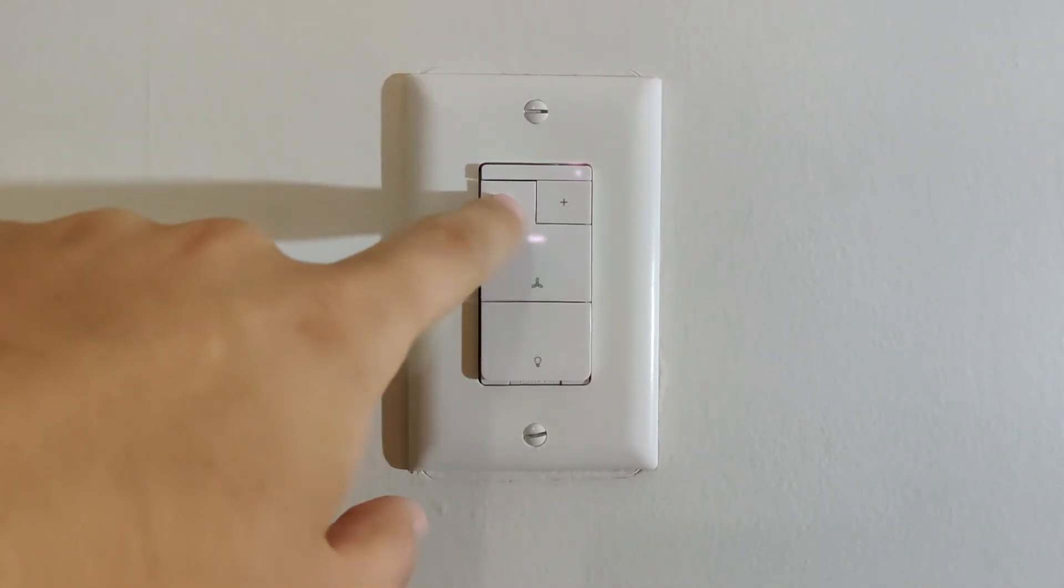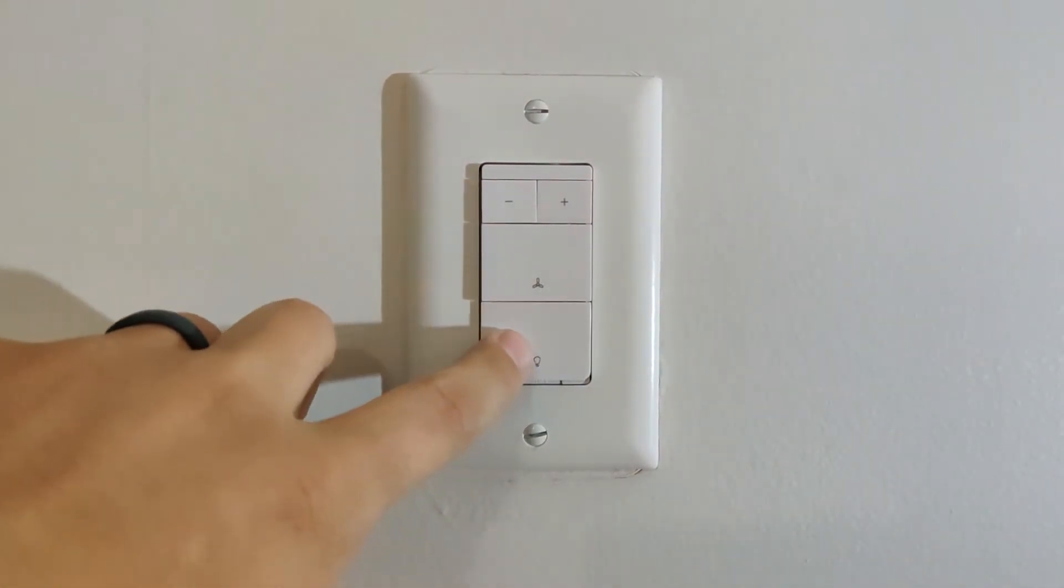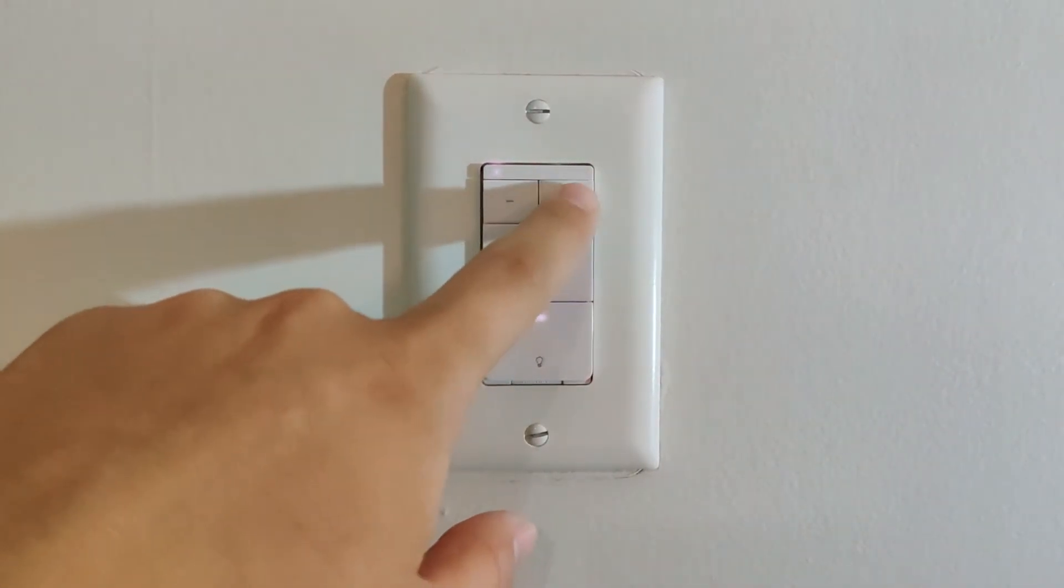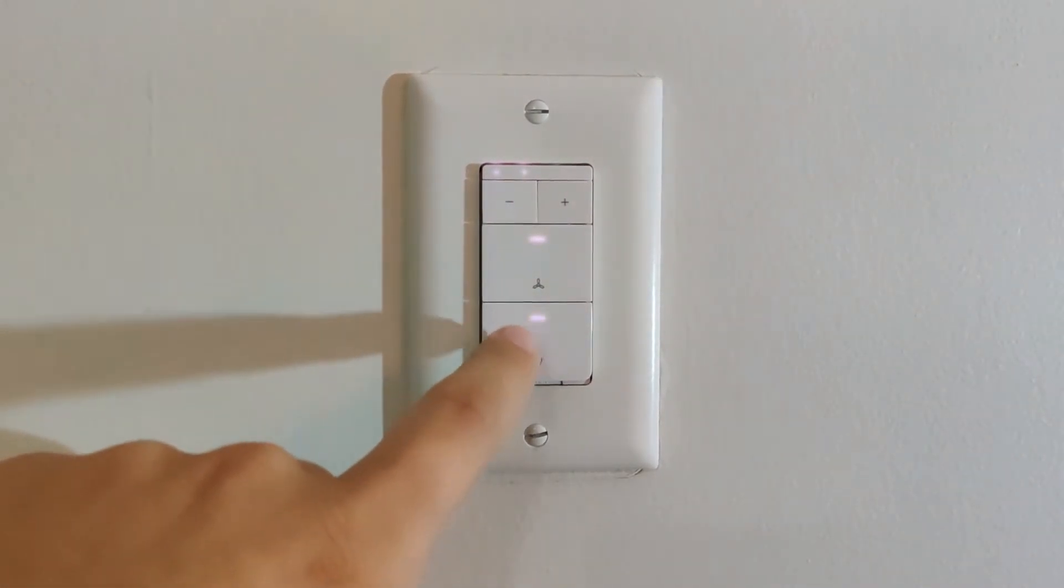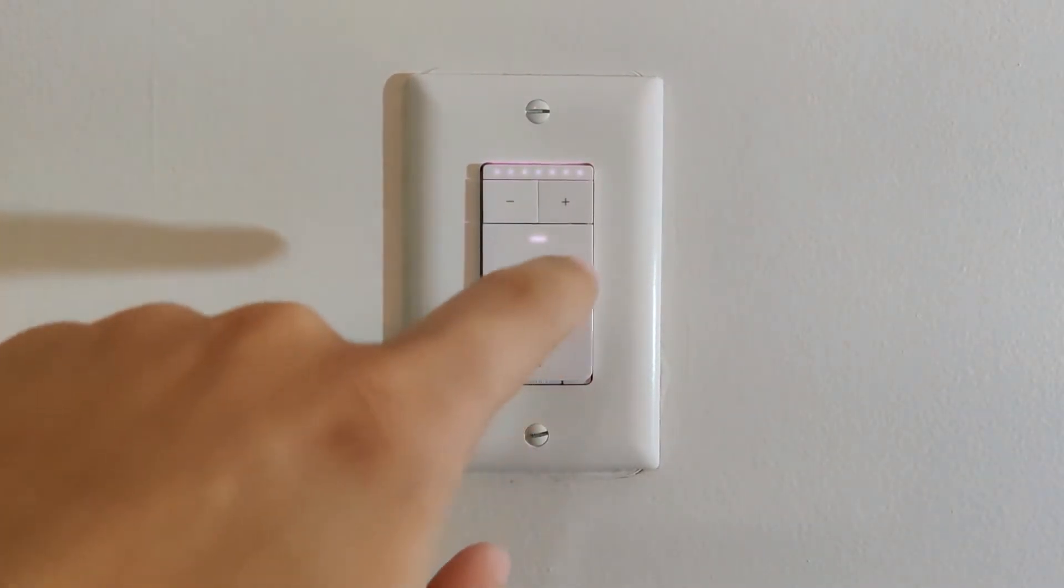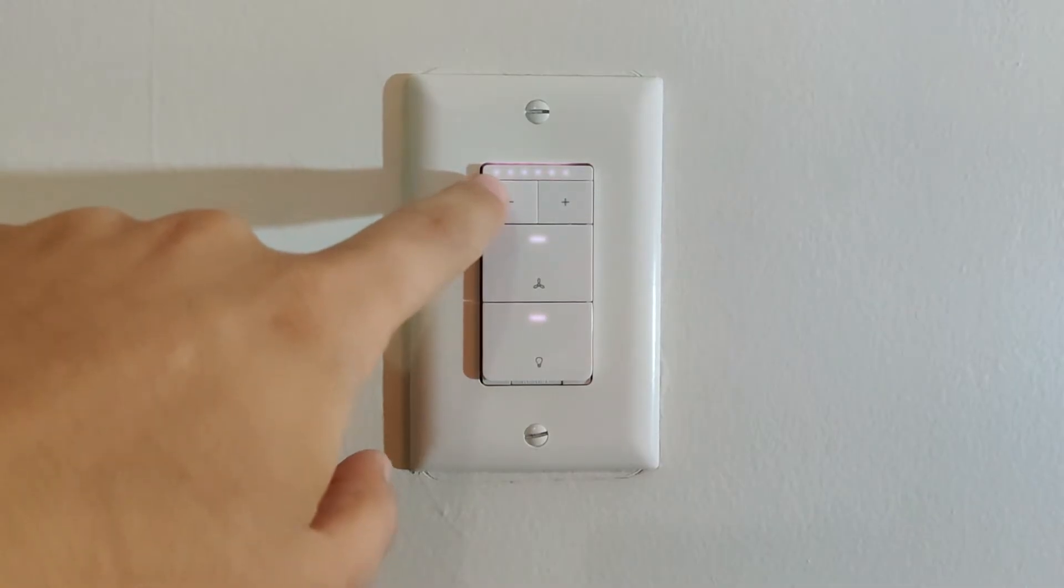Since this smart switch is essentially two switches combined, a fan and a light, and each one has adjustment capabilities with the plus or minus buttons, there has to be a way to select which one you're adjusting if they're both on. In this case you double tap the button for the device you want to adjust and then use the plus or minus buttons to adjust it.